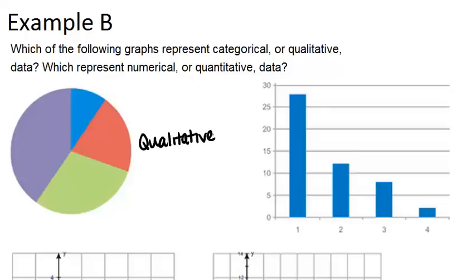The next chart that we have is a bar graph. And remember, we can tell it's a bar graph because the bars are not connected. We have these empty spots in between. And a bar graph is always for qualitative data.